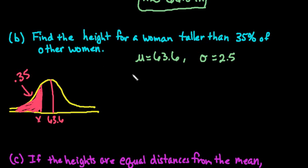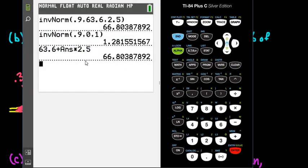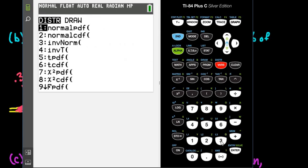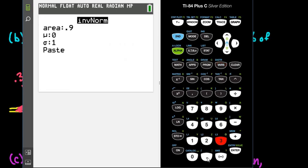So we would type in our calculator, we would do the inverse norm, 0.35, 63.6, 2.5. Or you could do the 0, 1, and use the other formula. So if I plug this in, we're going to do second distributions, option 3. And we're going to change our area to 0.35. We're going to go back to the 63.6, and 2.5.